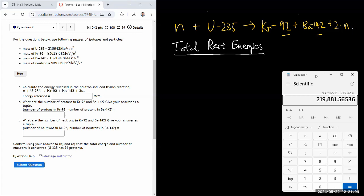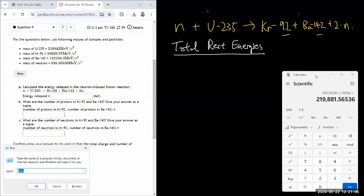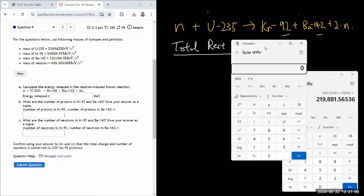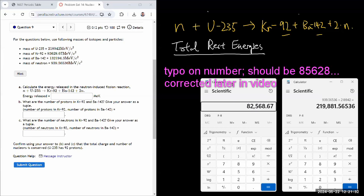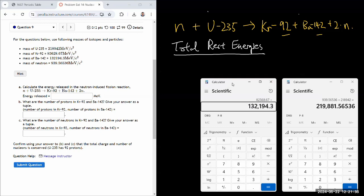And let me do a separate calculation with a separate calculator, the masses of the product. Okay, so the products are krypton-92, 85568.67 plus barium-142, 132194.3, all in the same units of mega electron volts, in terms of rest energy, plus 2 times the neutron, 939.56536, is equal to that. And comparing these two numbers, you can see that the total rest energy of the product is less.